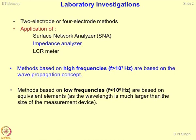What are the applications of these type of investigations? A surface network analyzer is equipment which is normally used for determining electrical properties under laboratory conditions. One can have an impedance analyzer or an LCR meter depending upon the frequency range in which you are interested in conducting the studies or mapping the impedance spectroscopy or impedance response of the geomaterial.